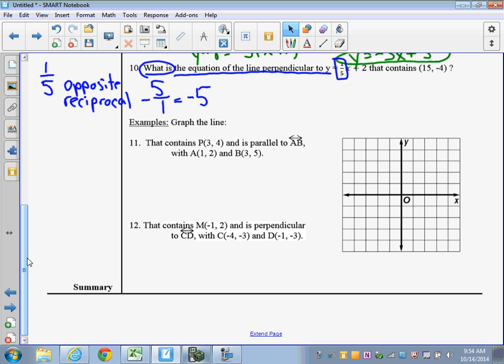So let's conclude with the last two examples. So sometimes you will be asked to either plot a point or find a point on a graph that's either parallel or perpendicular to a certain line that goes through this. So this is important. So it says graph a line. So the line that contains P, 3, 4. So 1, 2, 3, 1, 2, 3, 4. There's point P. And it's parallel to line AB. A is 1, 2. B is 3, 5.